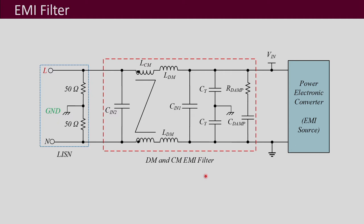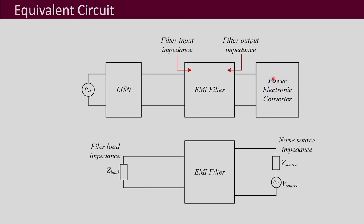Let us see the different terms for choosing an EMI filter. In this block diagram, the EMI filter sits between the LISN — the line impedance stabilization network, used to measure common mode emissions — and the power electronic converter. The LISN prevents noise from the supply entering the converter side and vice versa, enabling measurement of conducted emissions.